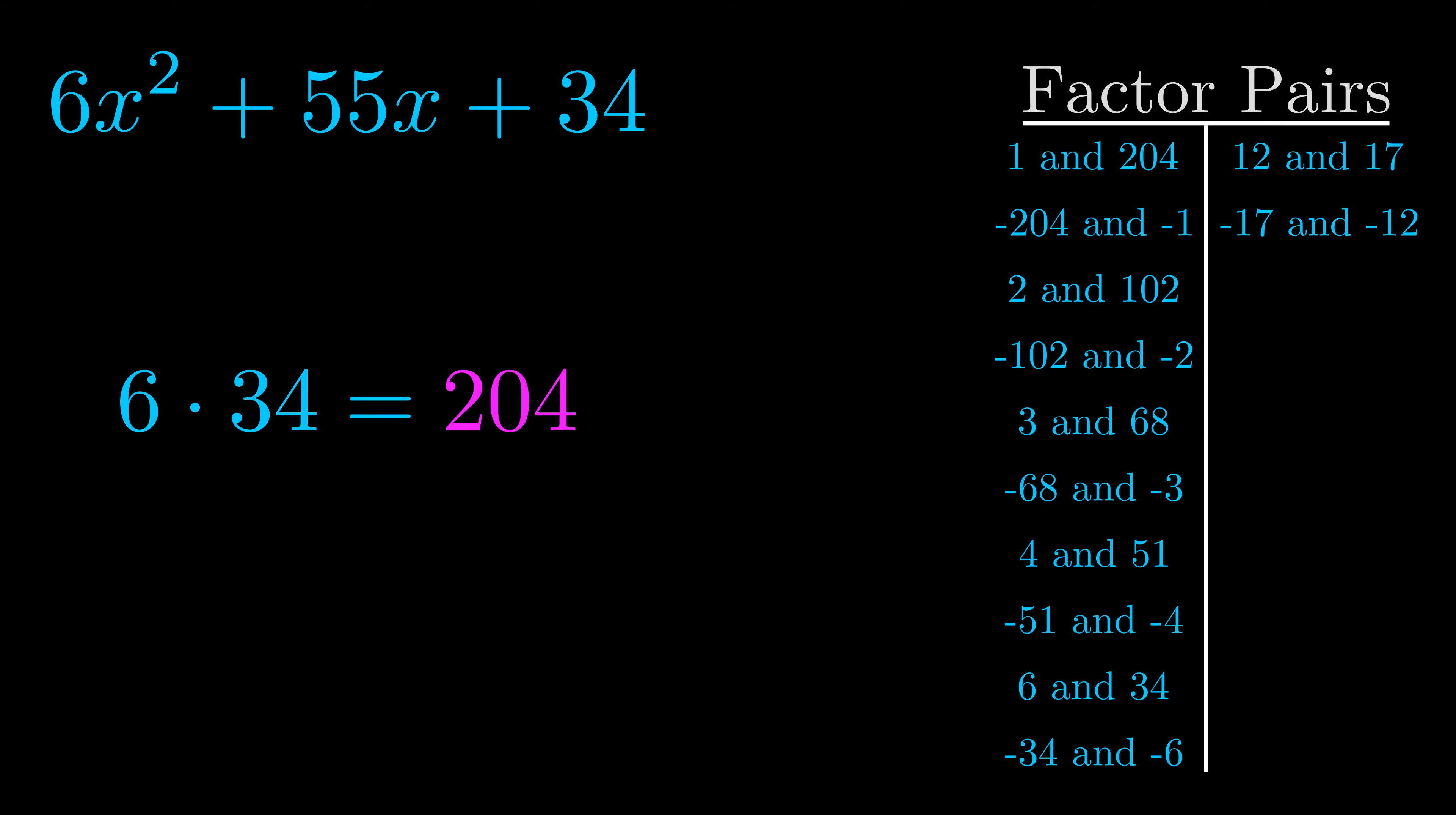The b value is the coefficient on the x term. That's the middle term, the one that we haven't done anything with yet. And really this is the only factor pair that we need.